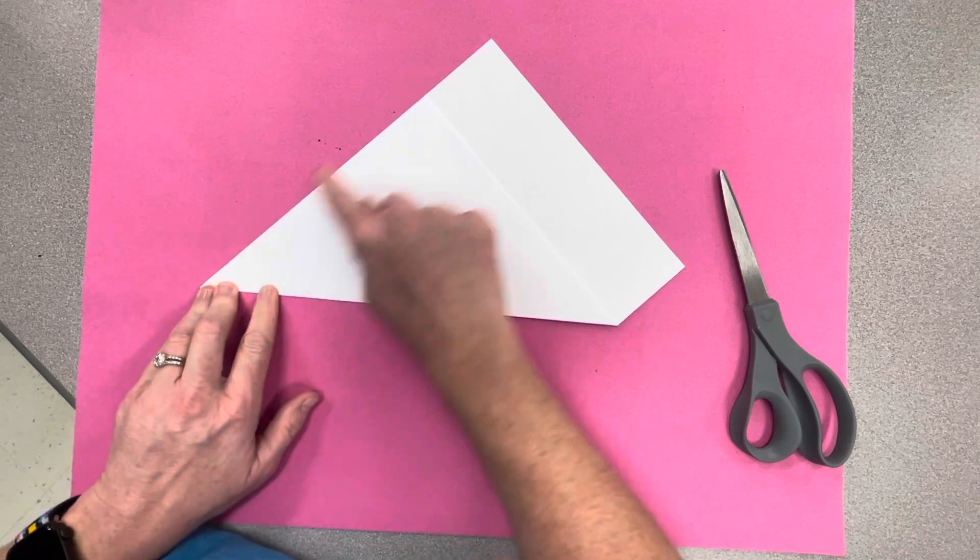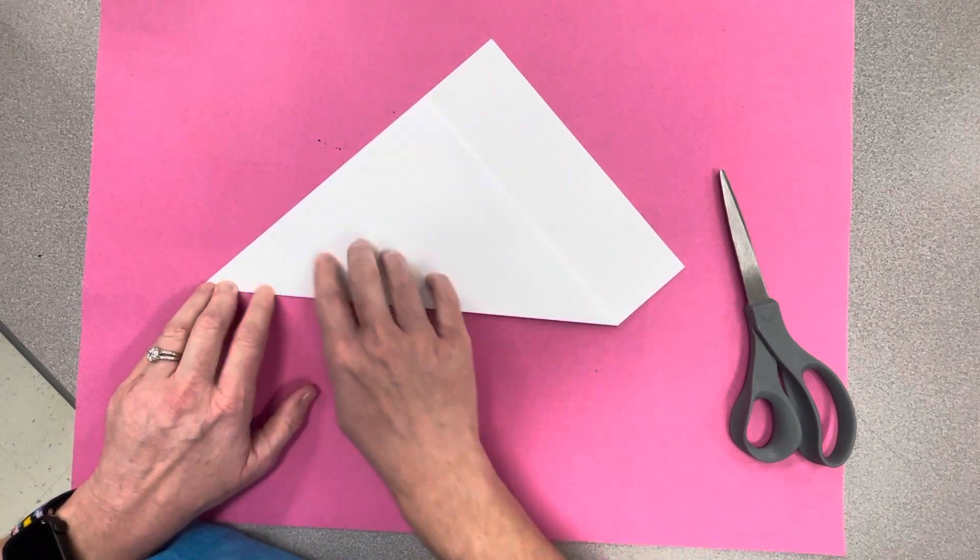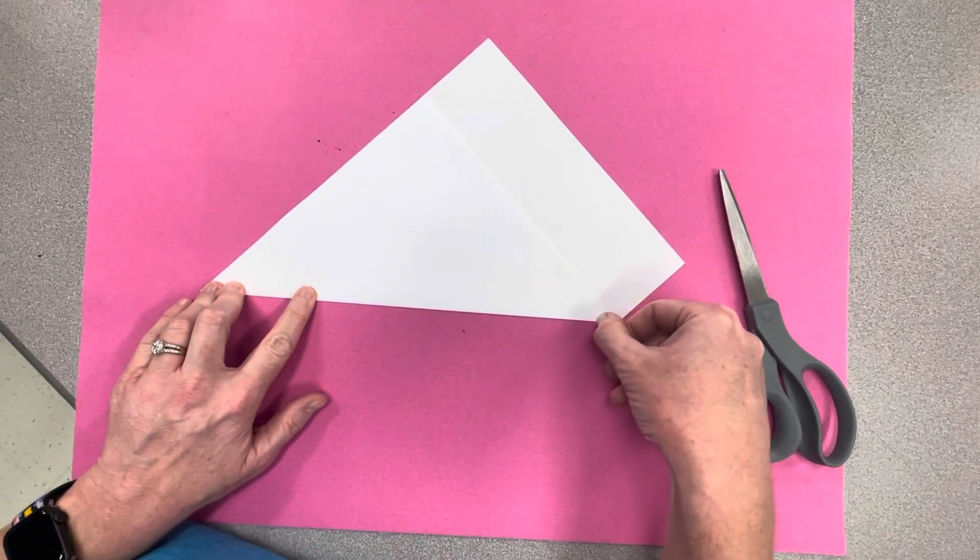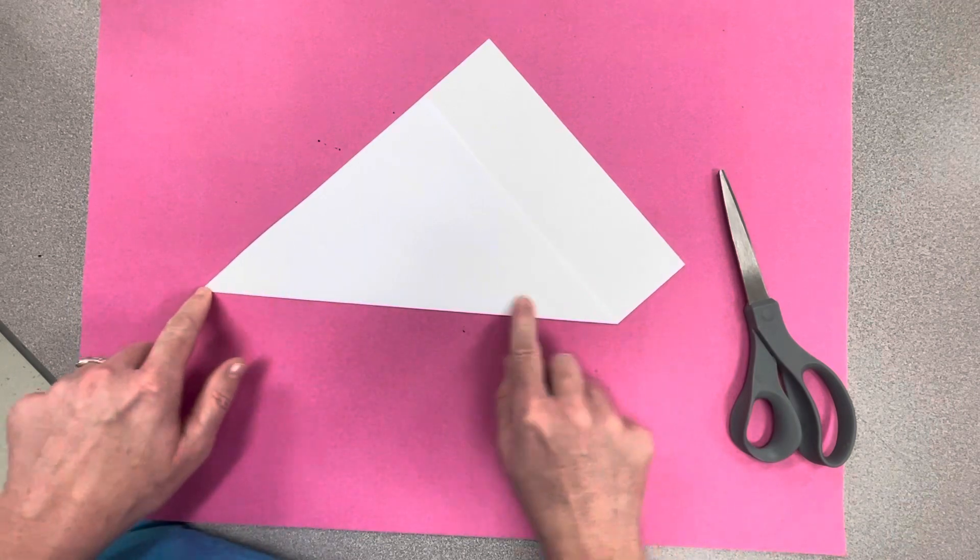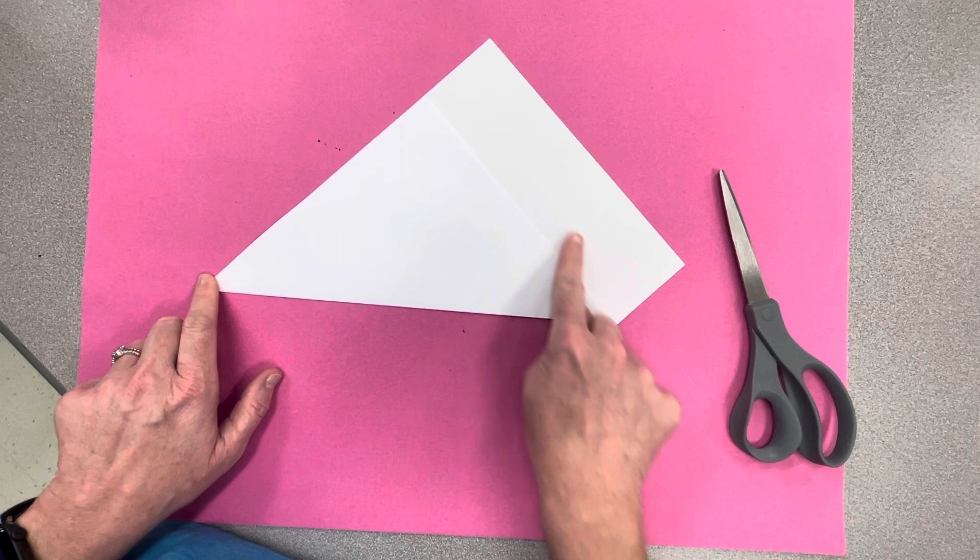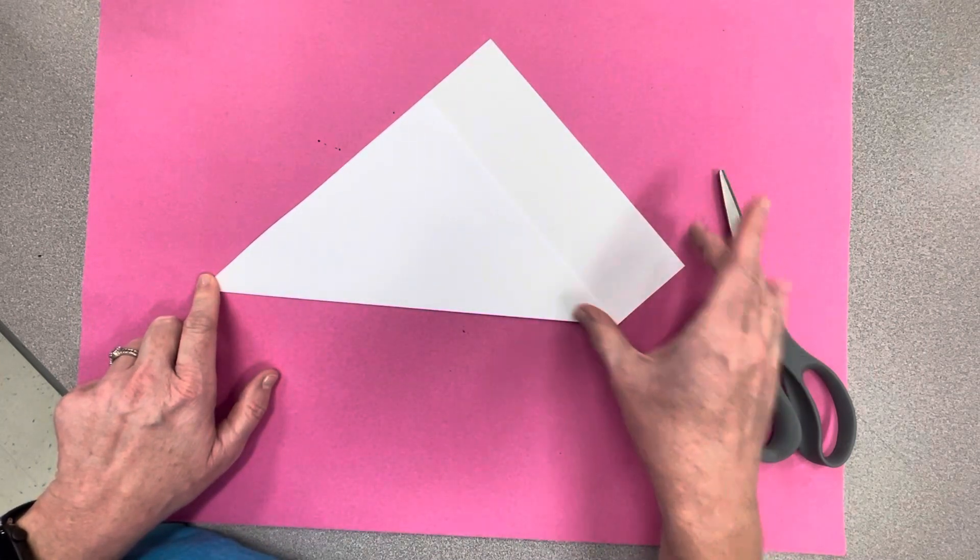So make sure that these two edges that are together are completely together all the way across, and then take your fingernail and run it along your fold and it makes a nice sharp crease. So do you see how you have a nice big triangle right here and then you have a rectangle sticking off.